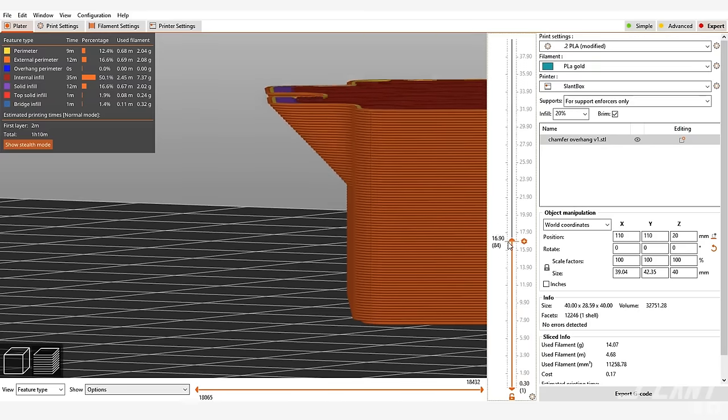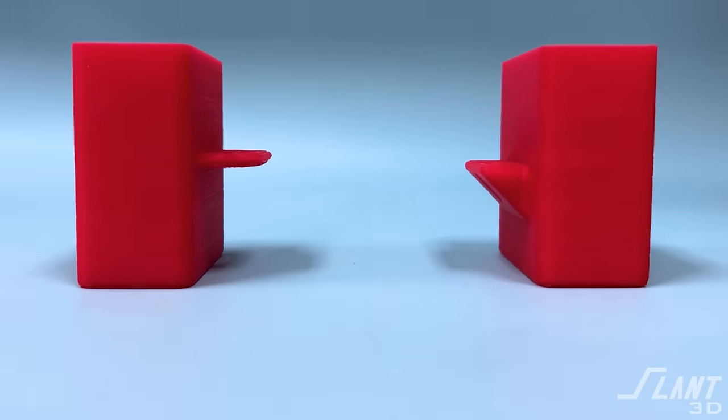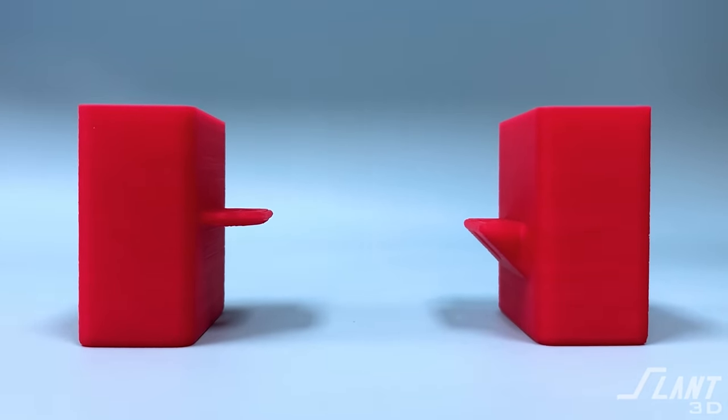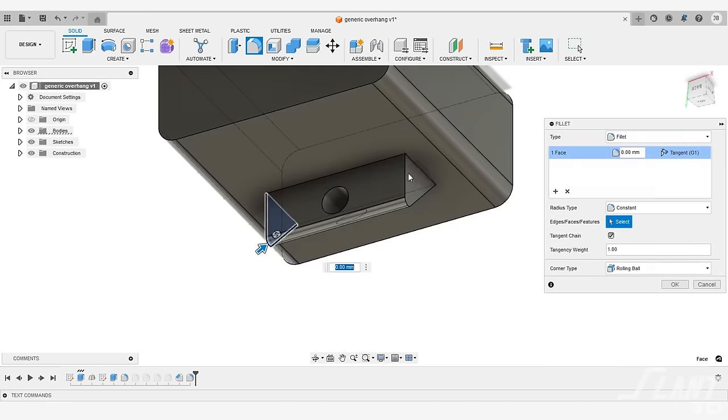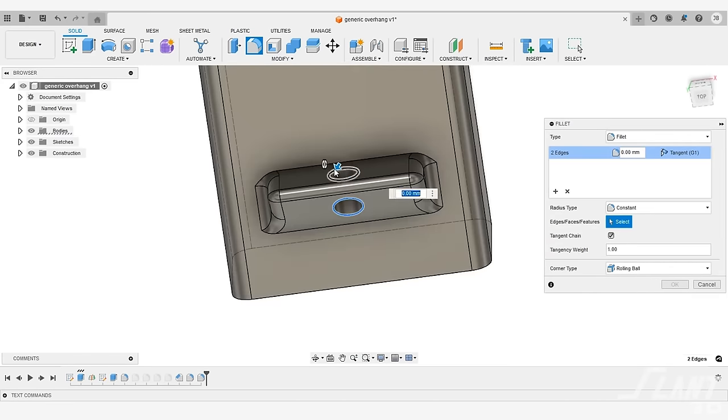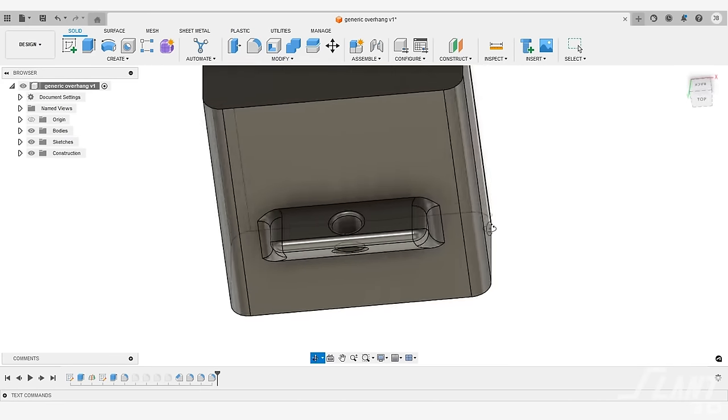This way you no longer have support, you haven't really added very much material so you don't add cost to the part, and it's much more durable than that tab would have ever been. This methodology allows you to create something really durable, really reliable, and it's pretty simple to model.